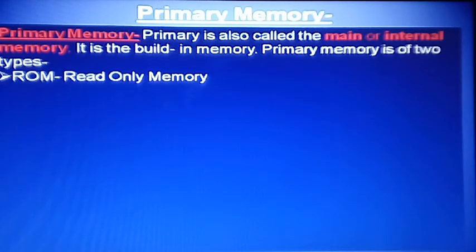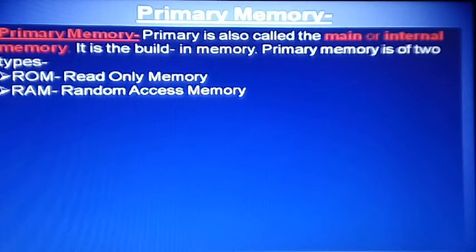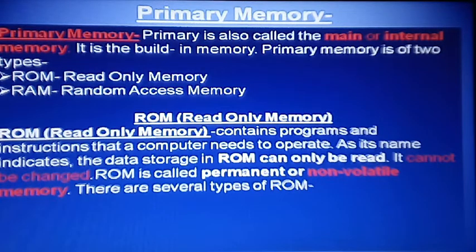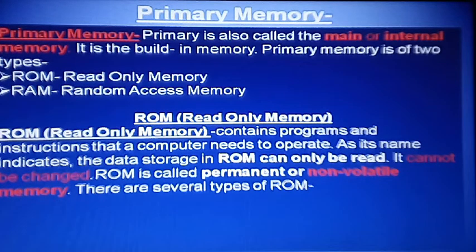There are two types of primary memory: ROM and RAM. ROM stands for Read Only Memory. It contains the programs and instructions that the computer needs to operate. ROM can only be read — the data stored in ROM cannot be changed. The most important point: ROM only reads the data but cannot store new data.